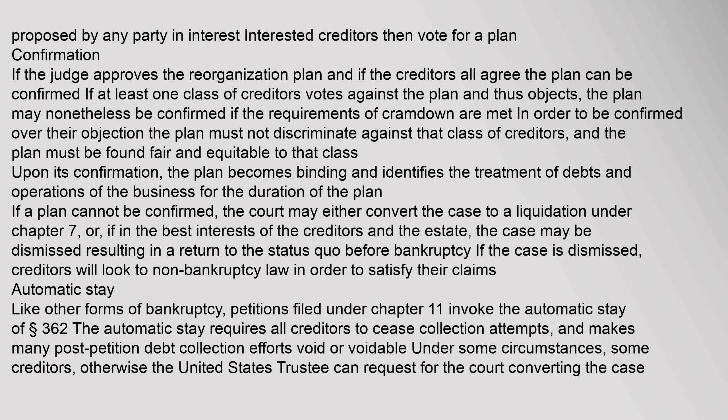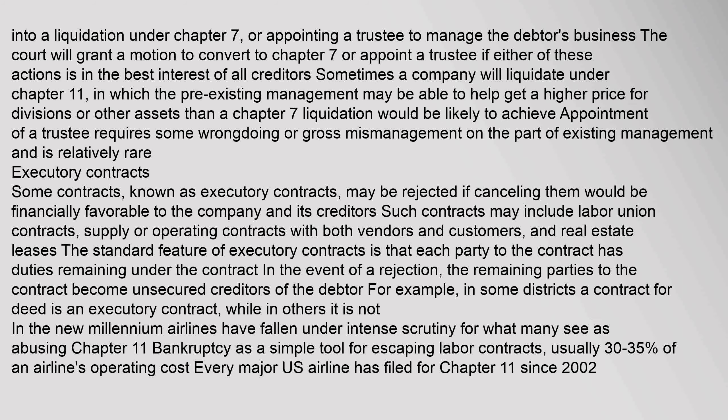Like other forms of bankruptcy, petitions filed under Chapter 11 invoke the automatic stay of Section 362. The automatic stay requires all creditors to cease collection attempts, and makes many post-petition debt collection efforts void or voidable. Under some circumstances, some creditors may seek relief from the automatic stay.